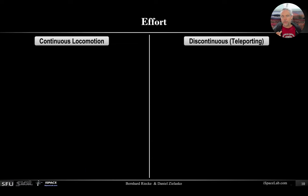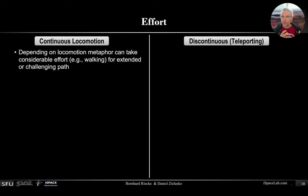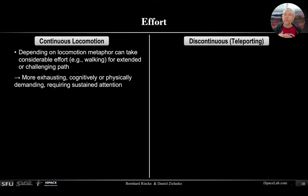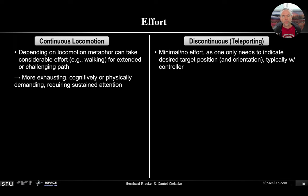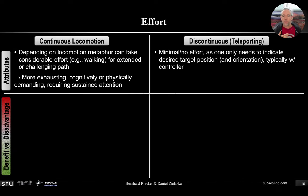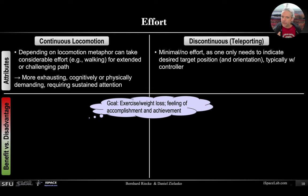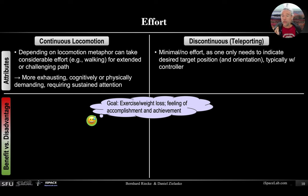Another example: effort. Continuous locomotion, depending on what you do — for example, if it's walking — can be quite strenuous, especially with extended or challenging paths. Continuous locomotion methods can be more exhausting, cognitively or physically demanding, and require more sustained attention. Whereas teleporting has minimal or no effort, as long as you can indicate where you want to go with the controller. If your goal is really to exercise, lose weight, or have a feeling of accomplishment and achievement — similar to hiking up a mountain and feeling exhausted but deeply satisfied at the top — then continuous locomotion might actually be the better interface, whereas teleporting might not be.